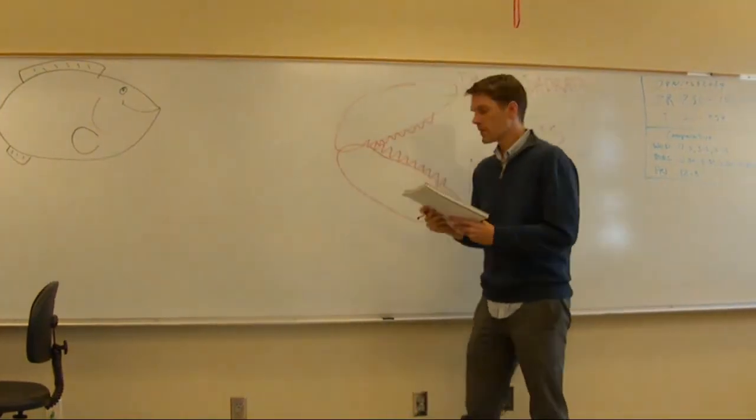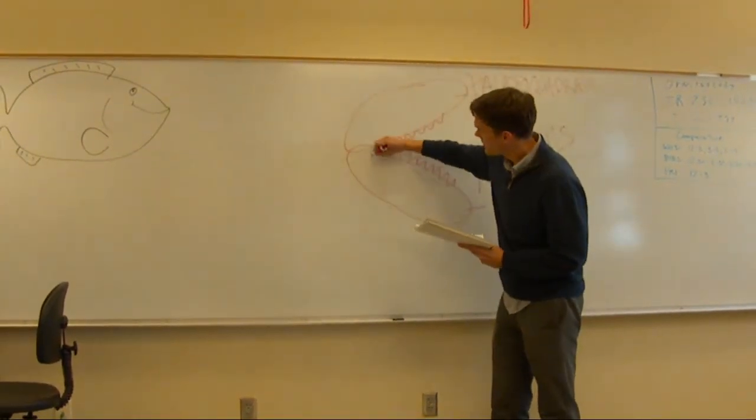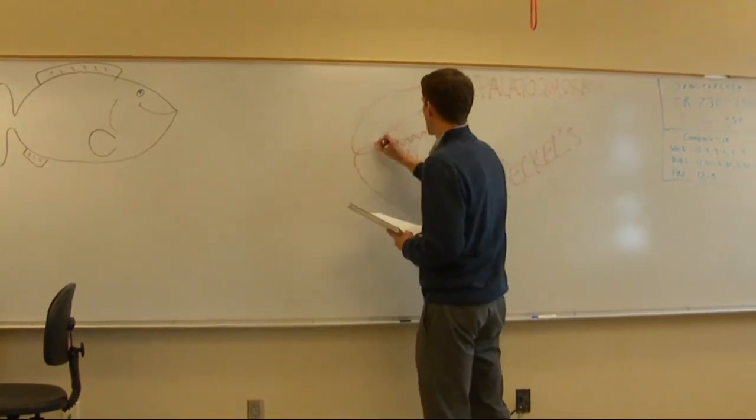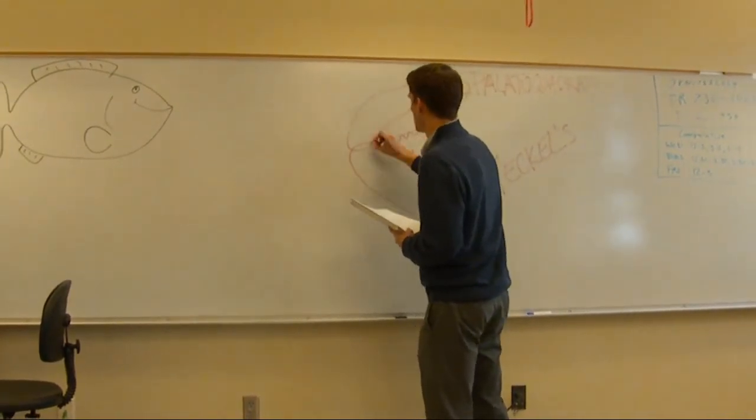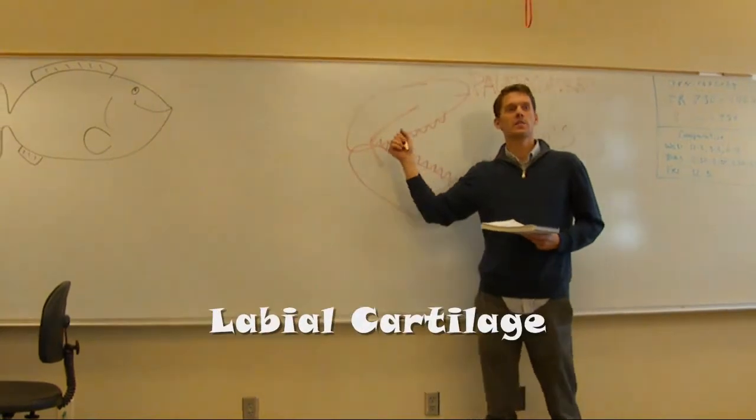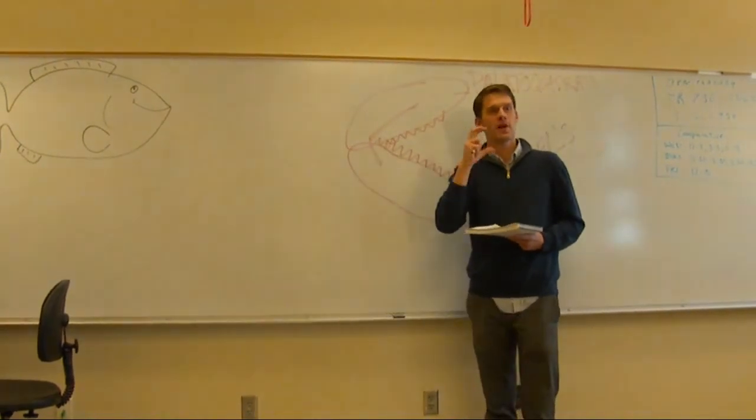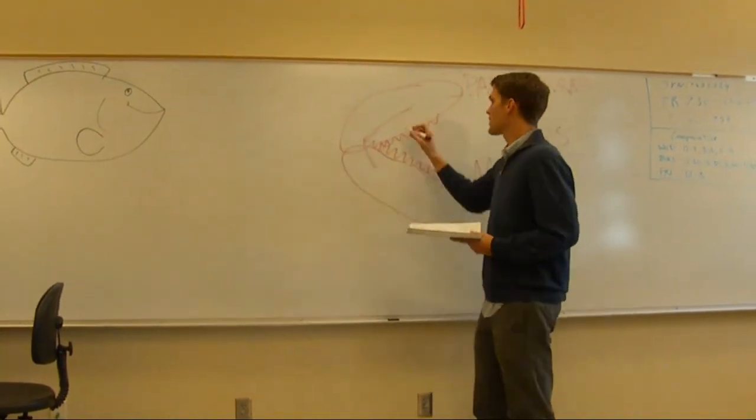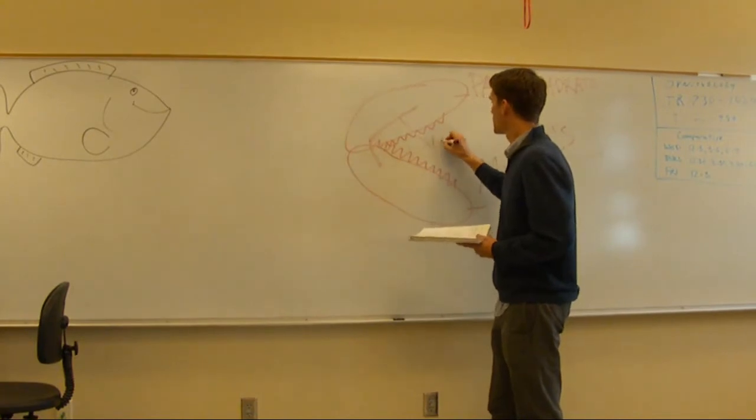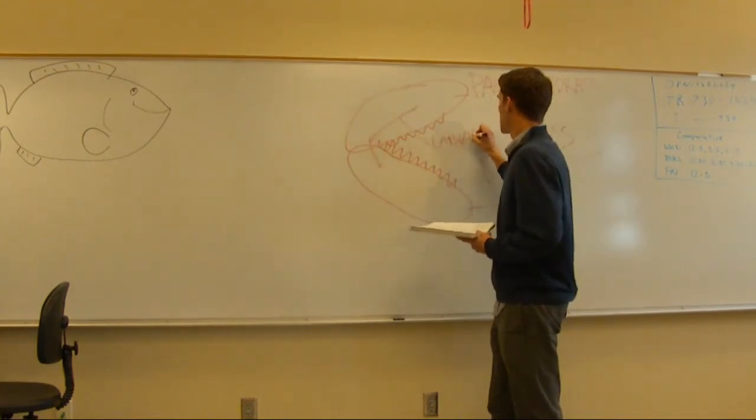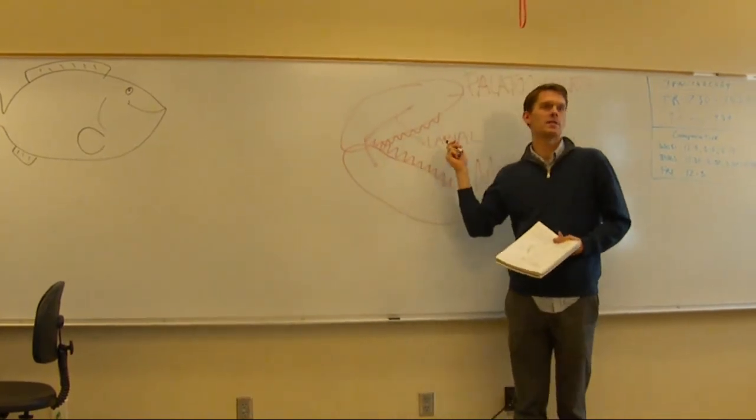Okay, and then you have a little piece of cartilage that kind of makes like a boomerang shape, big L. This is the cartilage that supports the lips, or the skin around the jaws. So it's called the labial cartilage, and labial means lip.